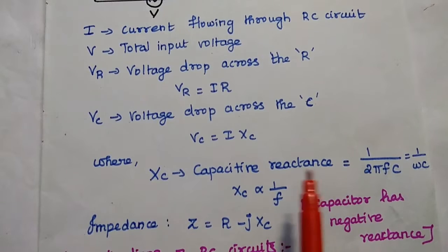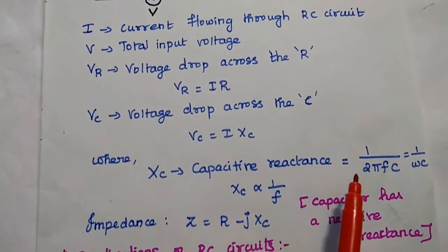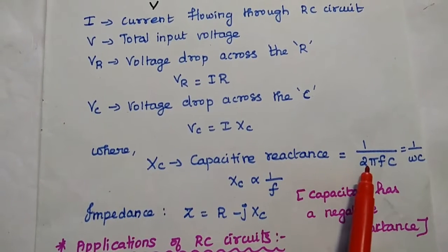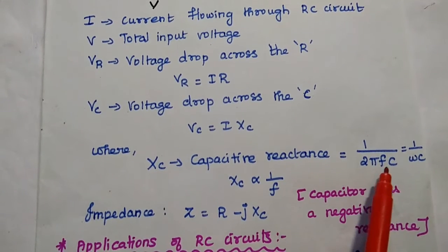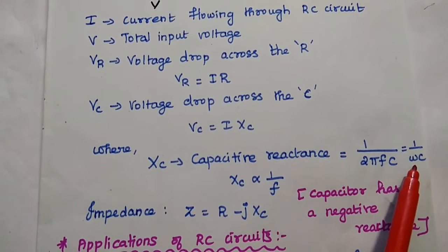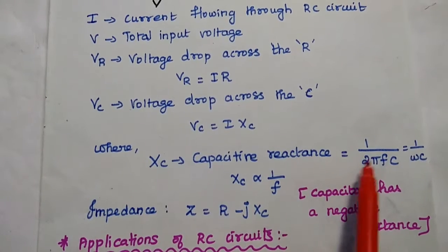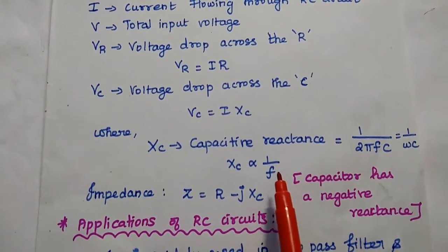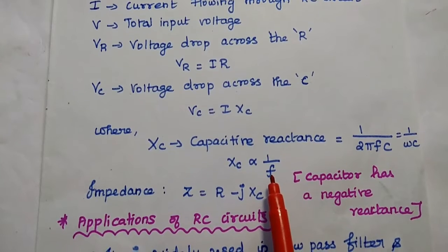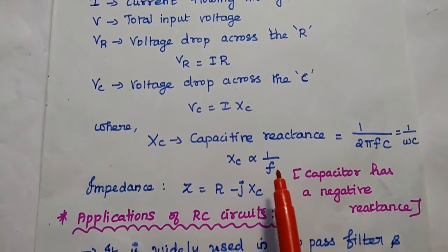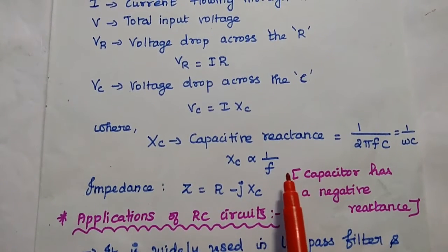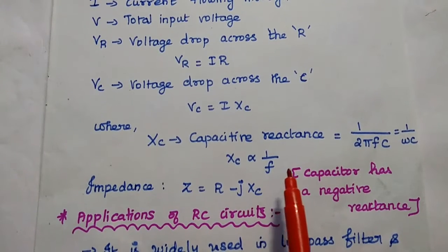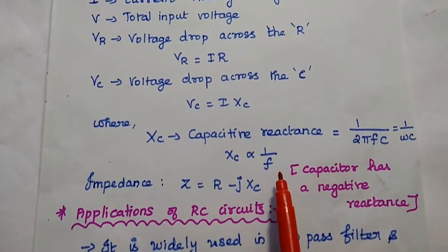The capacitive reactance is inversely proportional to the frequency of the circuit. Here 2πf can be written as the angular frequency omega. This concept is used in the field of filtering — it is widely used in low pass filters and band pass filters.